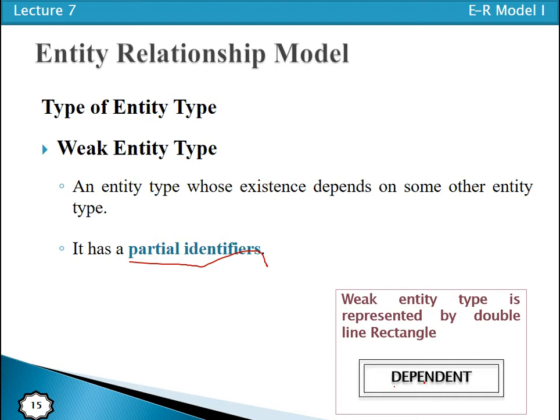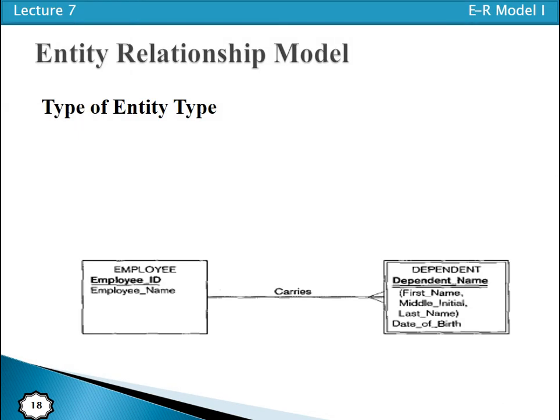To represent a weak entity type we use a partial identifier, while for a strong entity type we use a full identifier. For example, 'Employee' is a strong entity type and its identifier, Employee ID, is represented by underlining it. The identifier of a weak entity type, such as Dependent Name, must have a double underline to indicate it is a partial identifier.